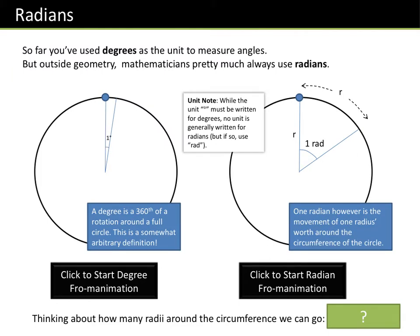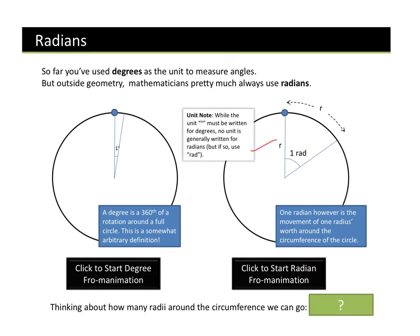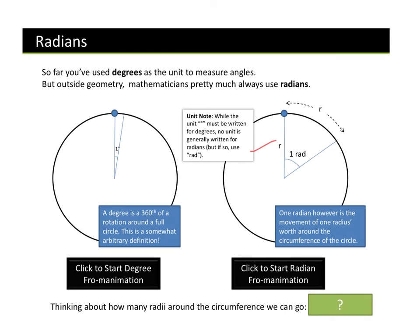So we have radians. We know degrees — there are 360 degrees in a circle. A radian, sometimes shortened, because mathematicians are lazy, we call it a rad. A radian is one rad.